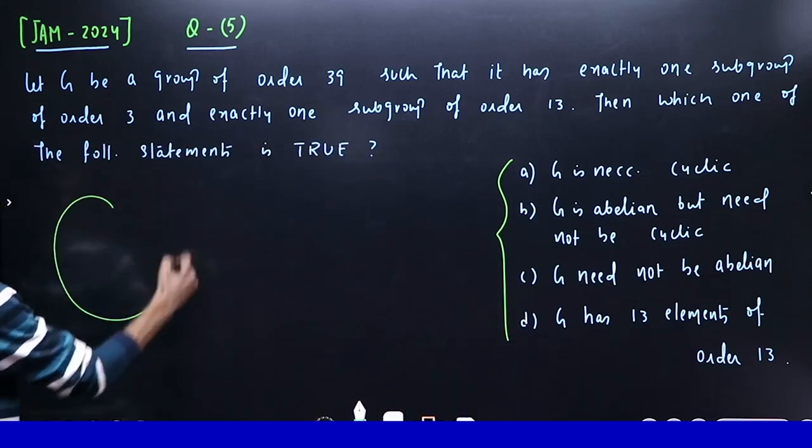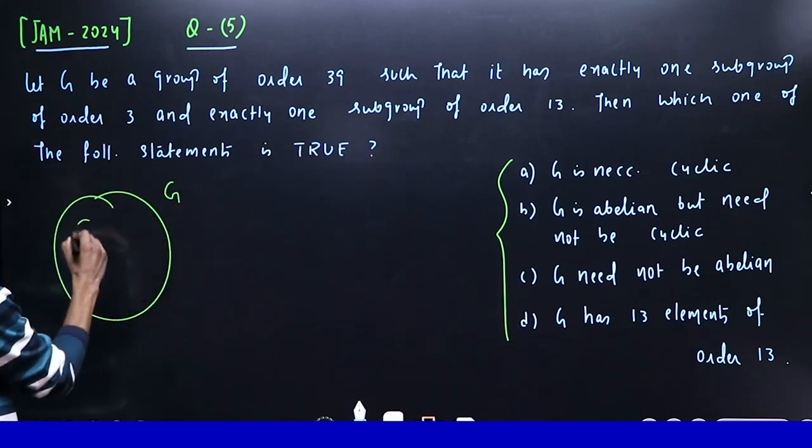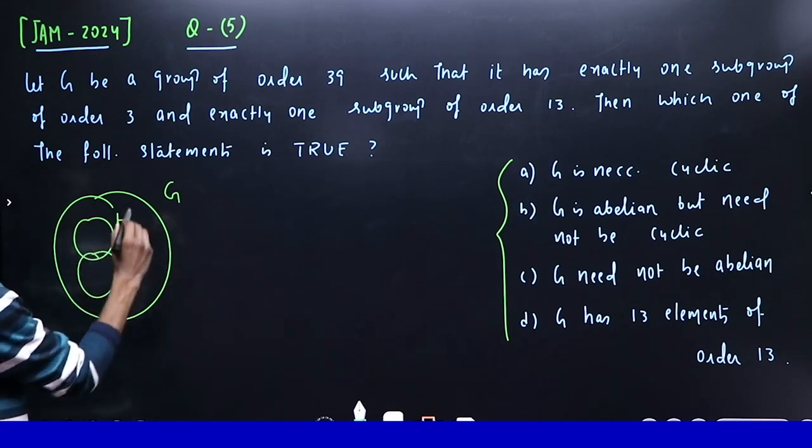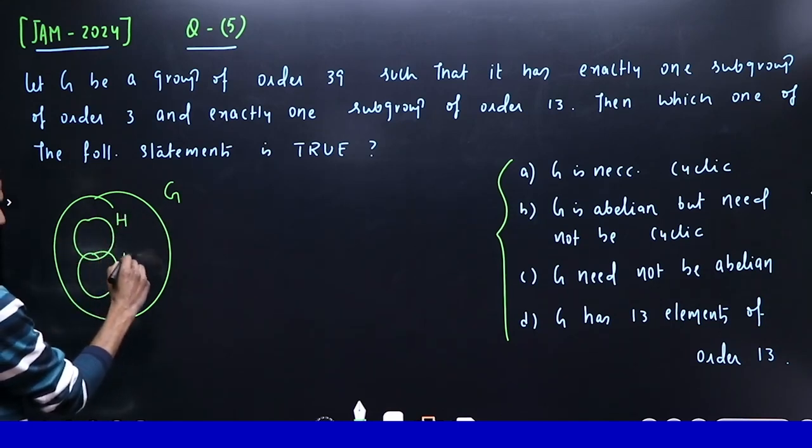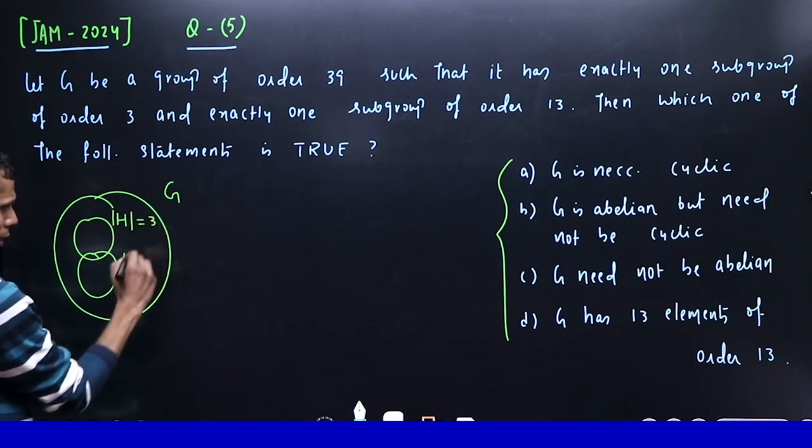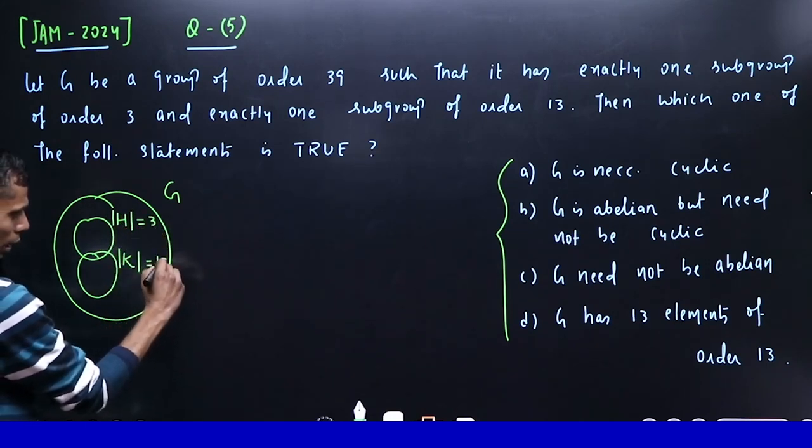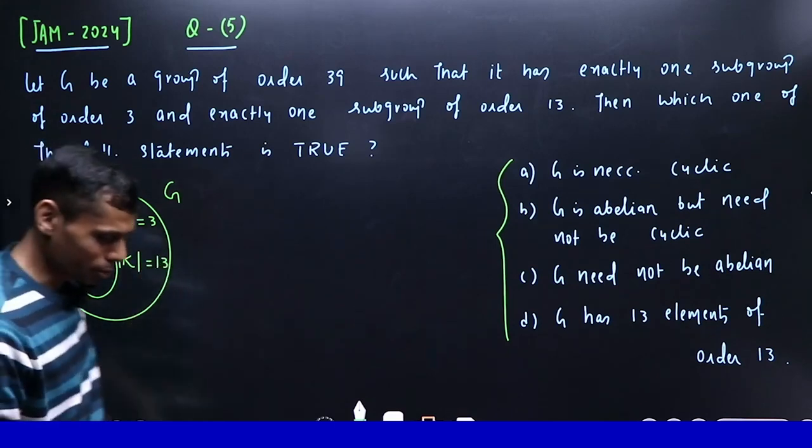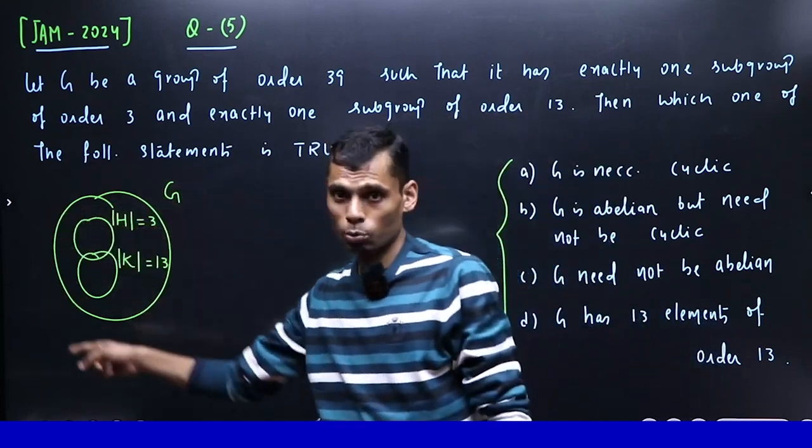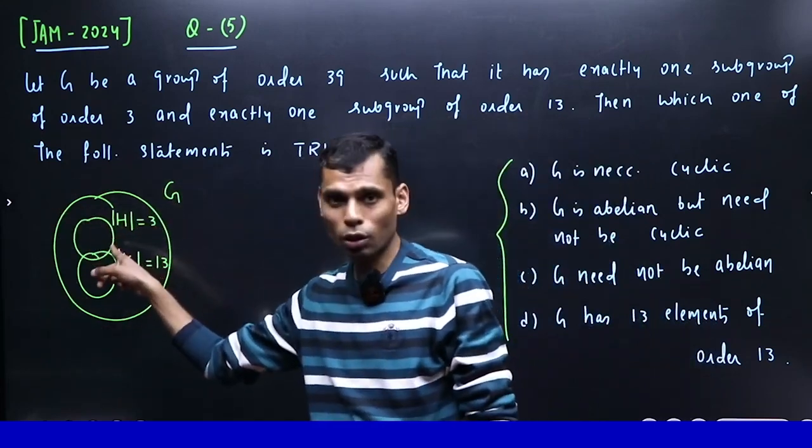This is G, this is 13-order subgroup K, this is 3-order subgroup H. Now you recall the rule: every group of prime order is cyclic. So H and K, the order is prime - H has order 3, K has order 13, so both are cyclic.